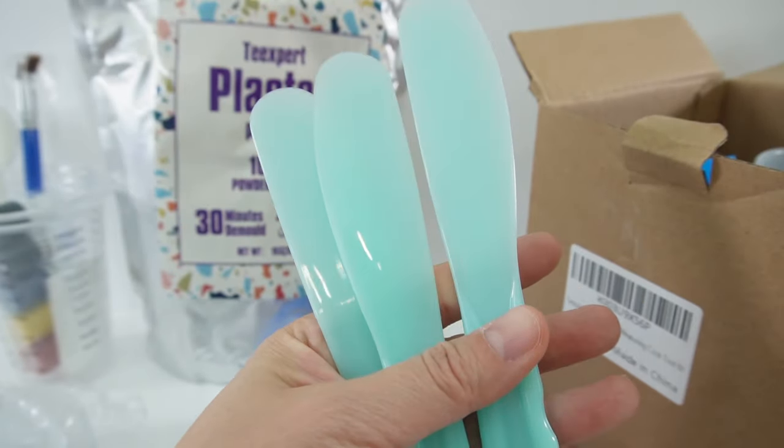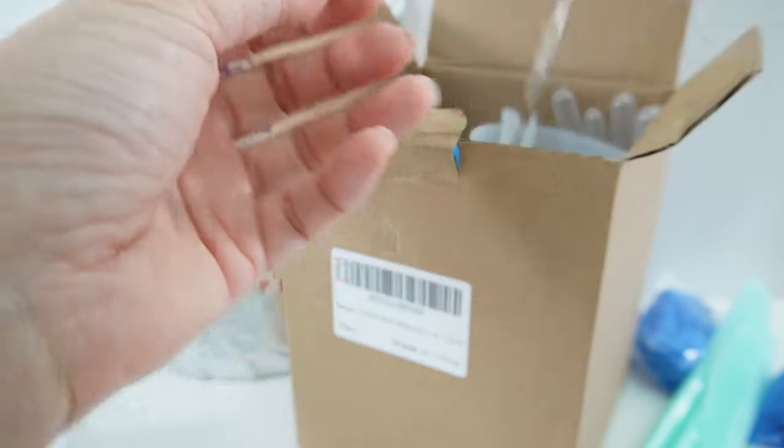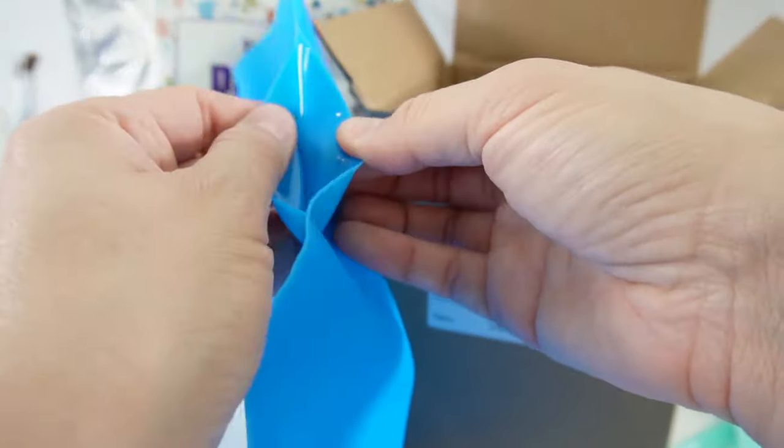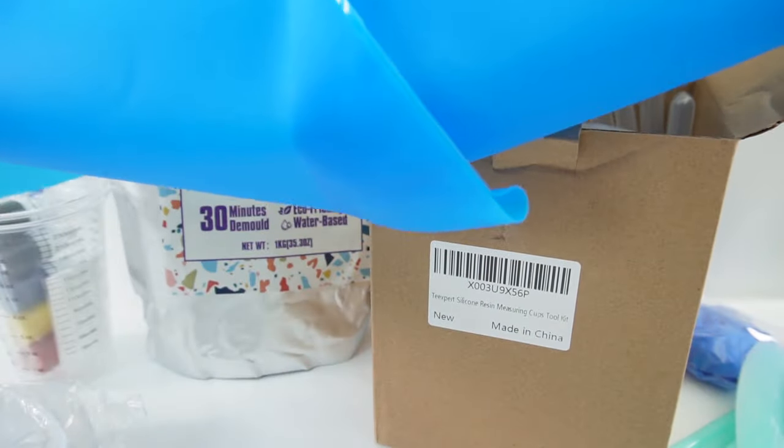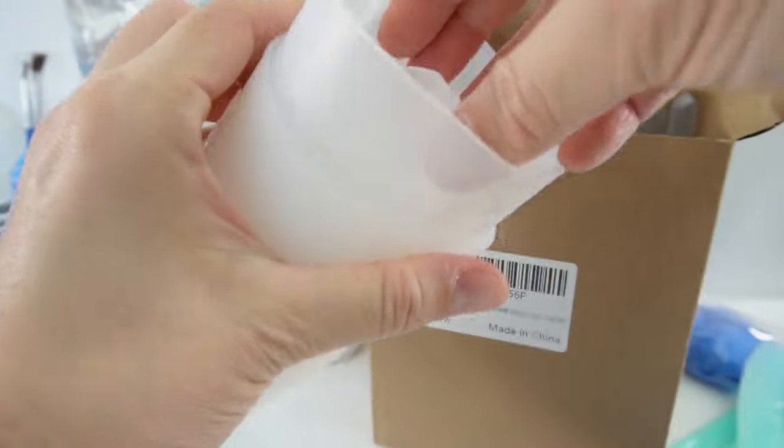Three large stir sticks, a silicone spreader, a silicone mat for your workspace. This one is actually pretty big. Two large measuring cups. These are 250 ml.